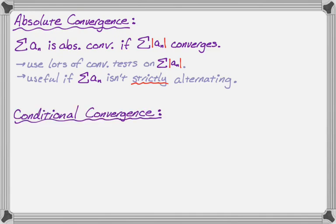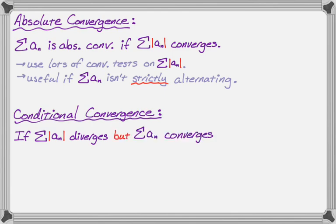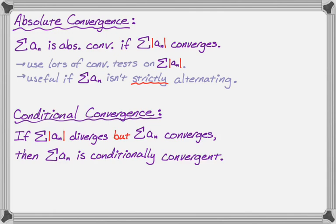Conditional convergence is sort of like: you try to see if it's absolutely convergent, and if it's not, then you check the actual series. So if the sum of the absolute value of a sub n diverges — meaning it's not absolutely convergent — but the sum of a sub n does converge without the absolute values, then we say the sum of a sub n is conditionally convergent, where the condition is that sometimes you need negative terms.